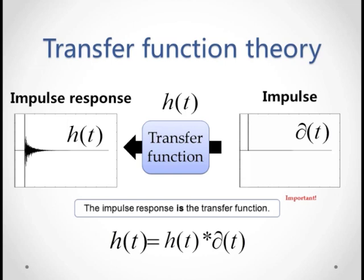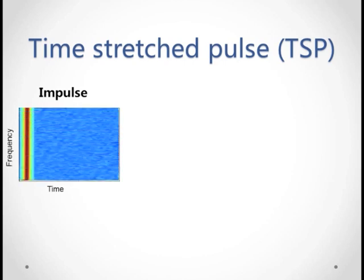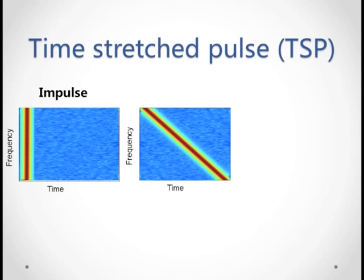The only problem is that impulses are so loud that most speakers aren't capable of playing them. Enter the time-stretched pulse, or TSP. The idea is, instead of playing an impulse, which contains all frequencies played at the same time, we stretch out the frequencies over time, resulting in what sounds like a downwards chirp. This is called the time-stretched pulse, or TSP, and it's something that speakers can play.